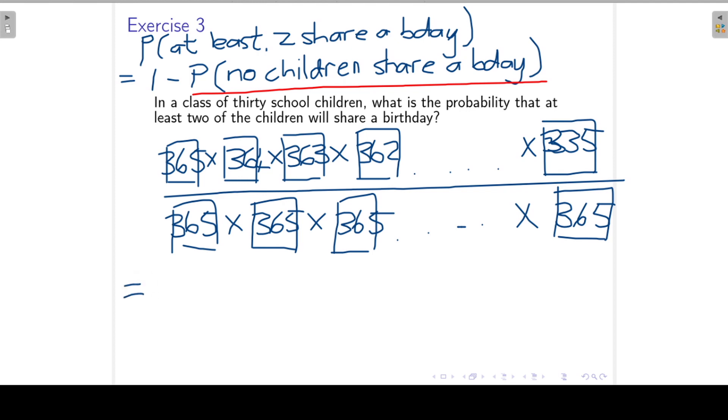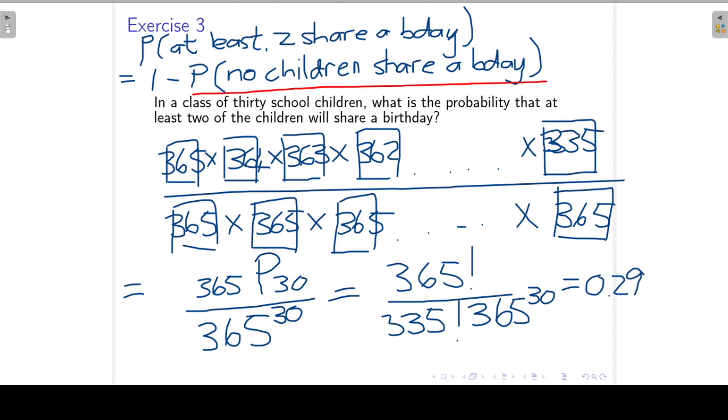So we can rewrite it as 365 permutation 30 divided by 365 to the power 30. That is 365 permutation 30, and then I divide it by 365 to the power 30. And that probability is equal to 0.2936.